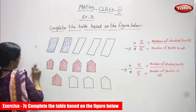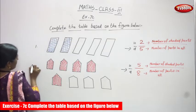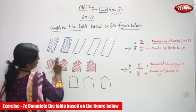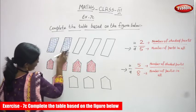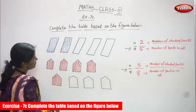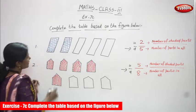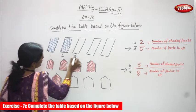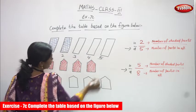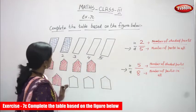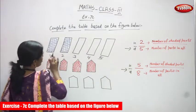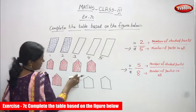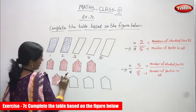Look at this diagram. So, this is a rectangle, but it's a slanting rectangle. So, how many rectangles? 1, 2, 3, 4, 5. So, total number of rectangles — slanting rectangles — is 5.